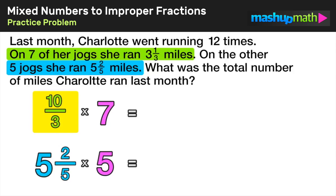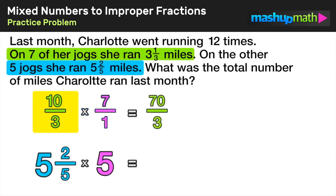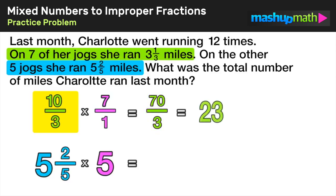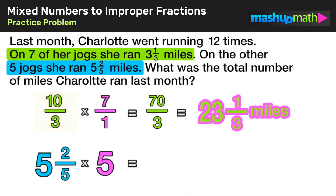Now we are ready to multiply ten over three by seven. We can express seven as a fraction — seven over one — and when we multiply these two fractions together our product is seventy over three. Seventy divided by three equals twenty-three with a remainder of one, so that's twenty-three and one-third miles. She ran a total of twenty-three and one-third miles on those seven jogs.